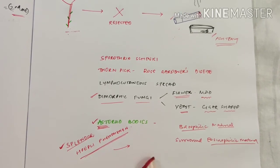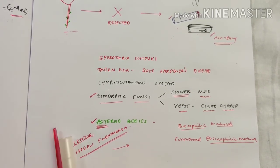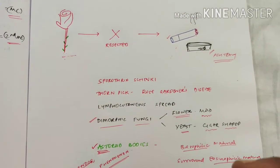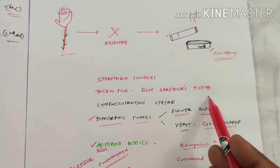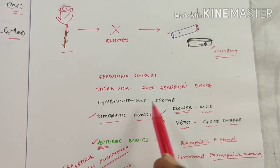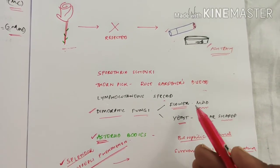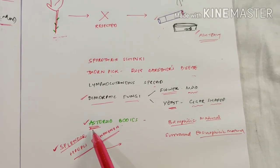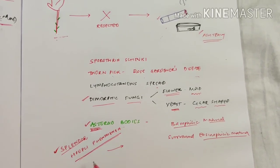So by this simple story you can remember the whole topic: Sporothrix schenckii, thorn prick or rose gardener's disease, lymphocutaneous spread, it's a dimorphic fungus showing flower-like mold and cigar-shaped yeast, it shows asteroid bodies, and it shows Splendor-Hoeppli phenomenon.